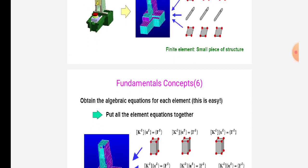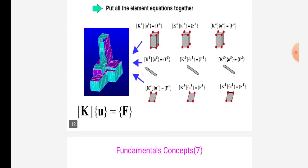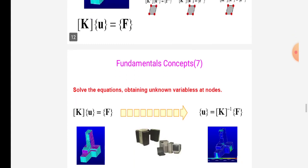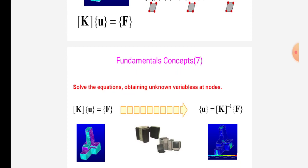Obtain the algebraic equation for each element. Put all the element's equations together. Solve the equations obtaining unknown variables at nodes. Like, K into U is equal to F is equal to U is equal to K inverse into F.